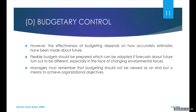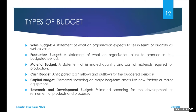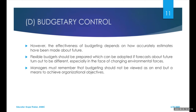Various types of budgets include a material budget, which is a statement of estimated quantity and cost of materials required for production; and an R&D budget, which estimates spending on research and development for improving products. The effectiveness of budgeting depends on how accurately estimates have been made about the future. Managers must remember that budgeting should not be viewed as an end, but as a means to achieve organizational objectives.